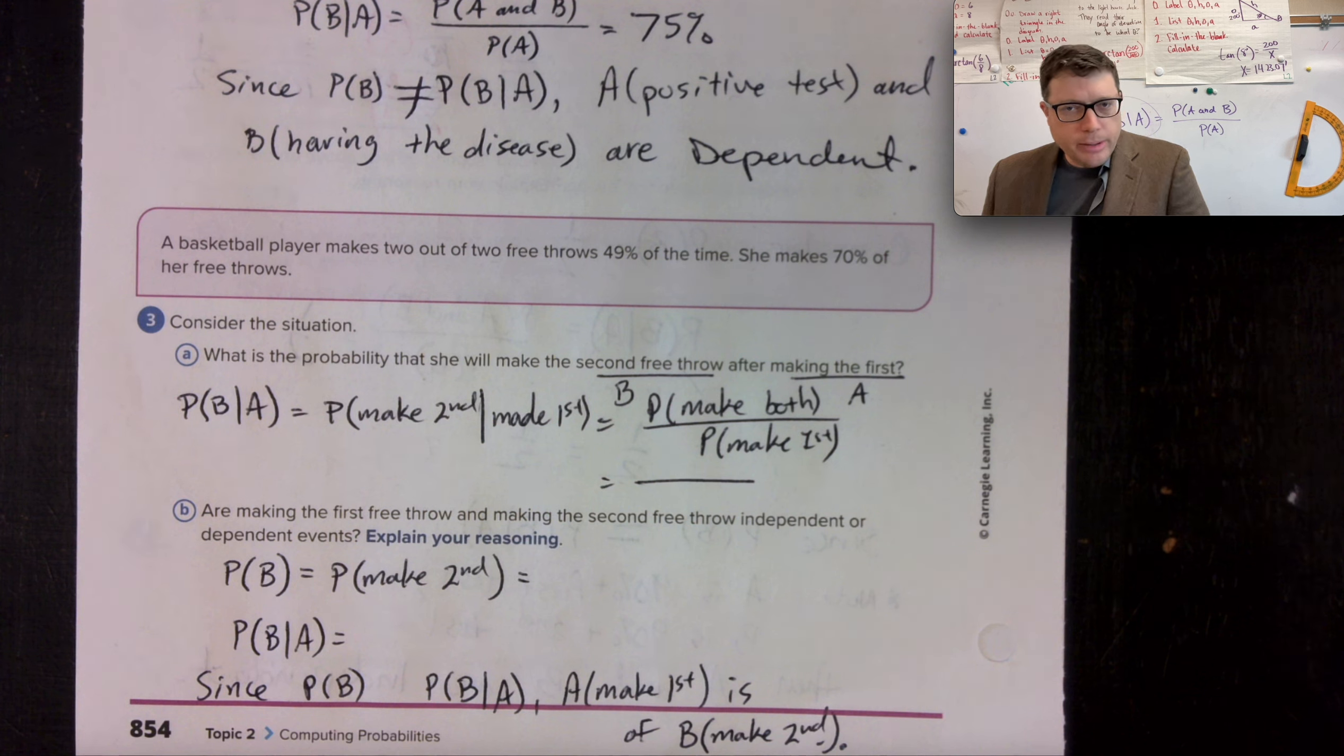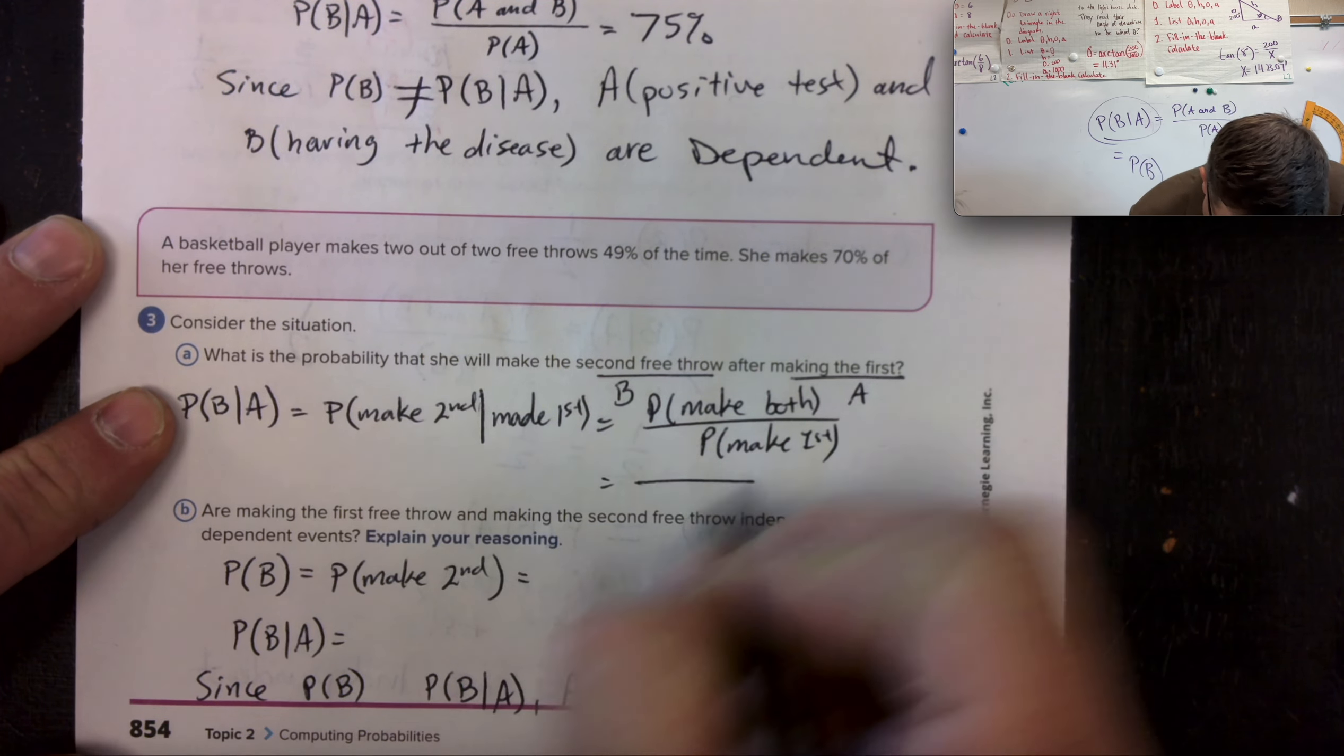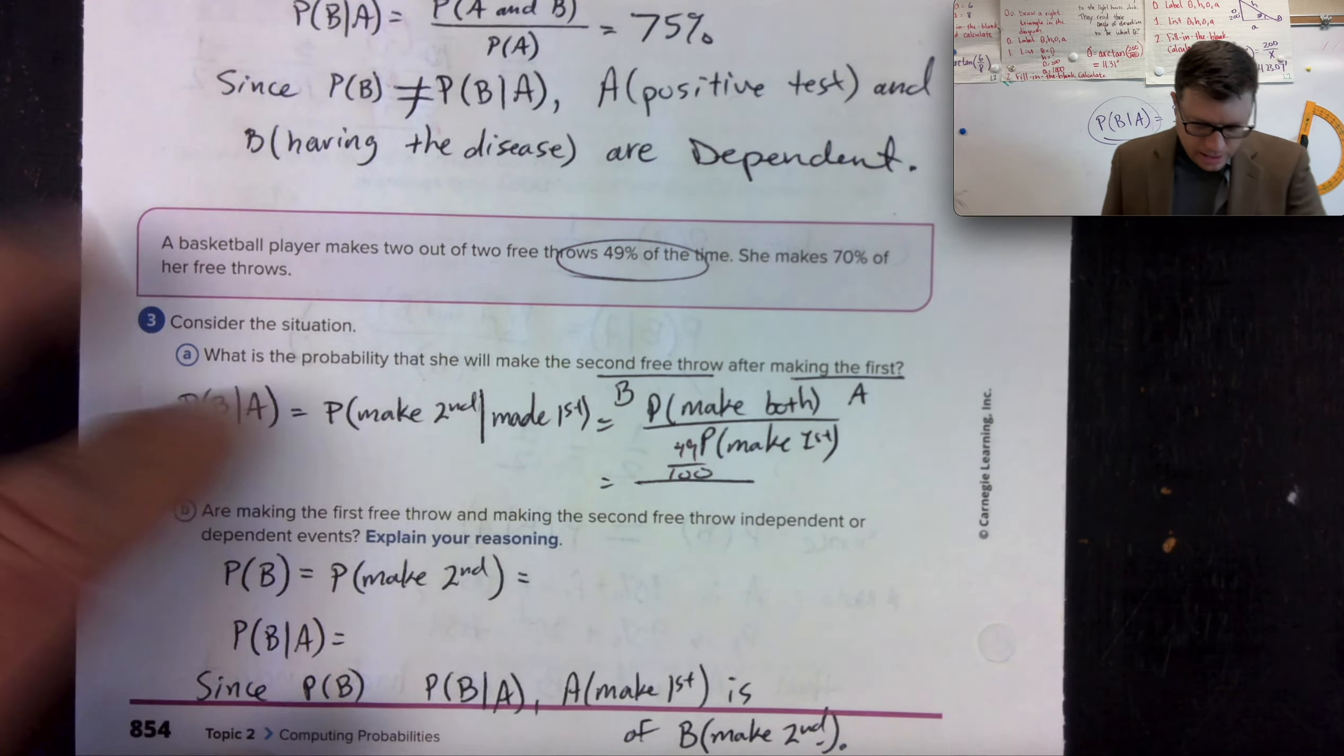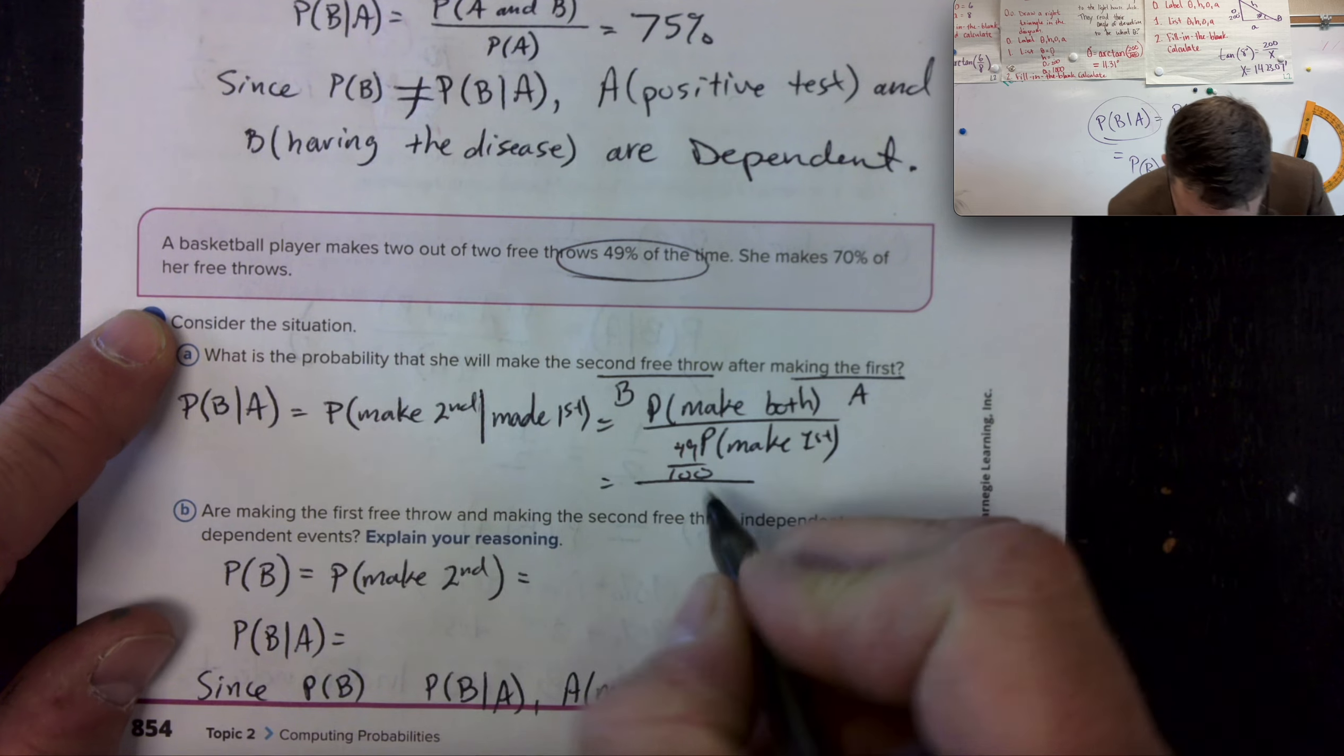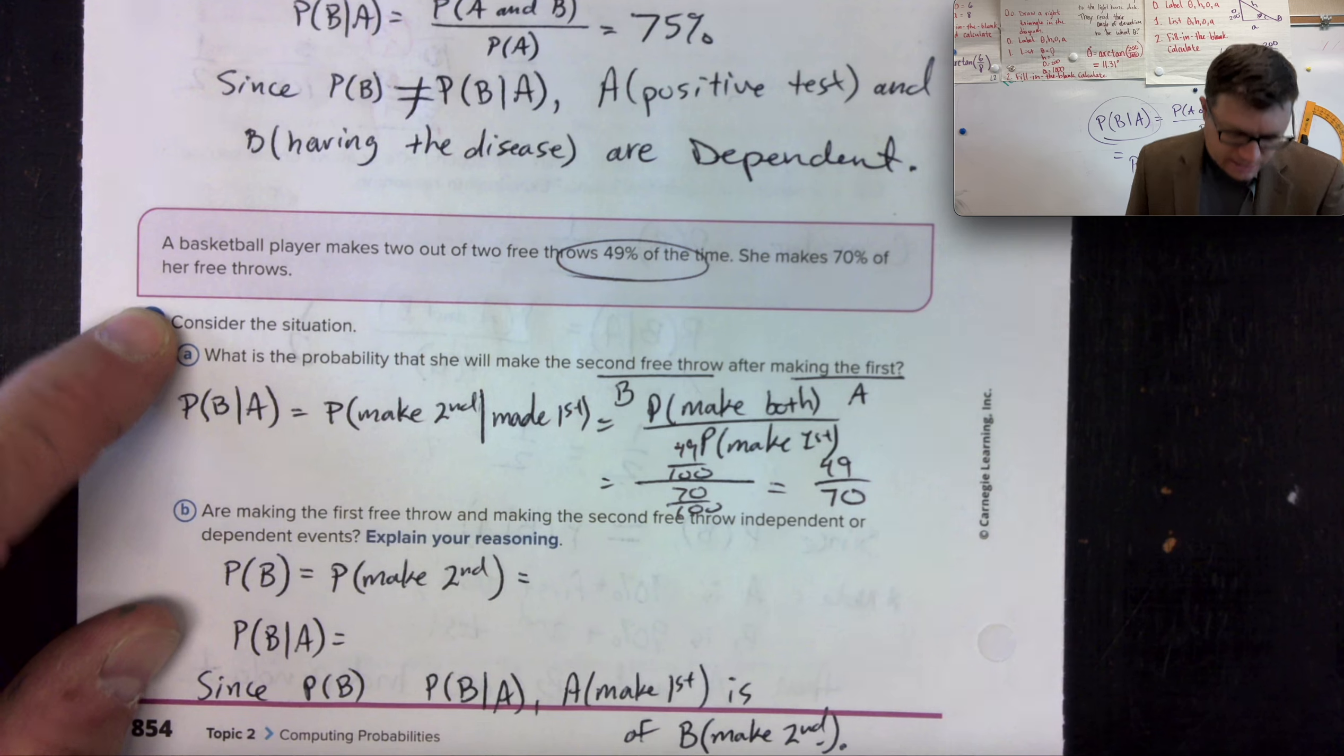Made the first, made the second, probability of making both given making the first. So that would be 49 out of a hundred, and then that's making both. And then she makes 70% of her free throws, so we have 70 out of a hundred, which means 49 out of 70.